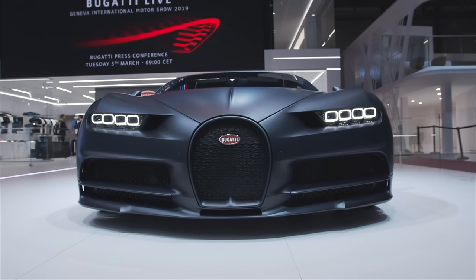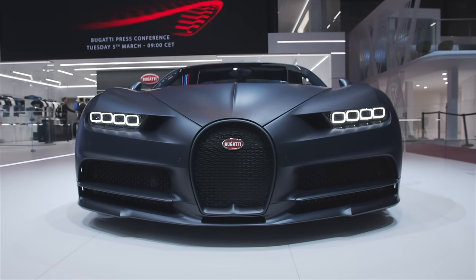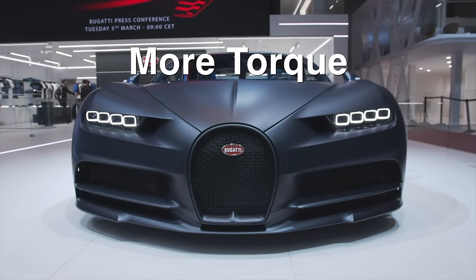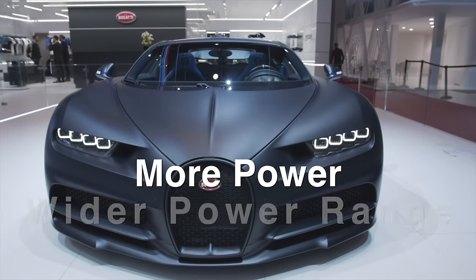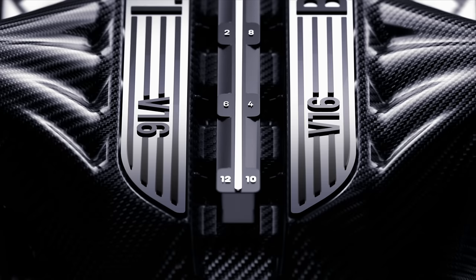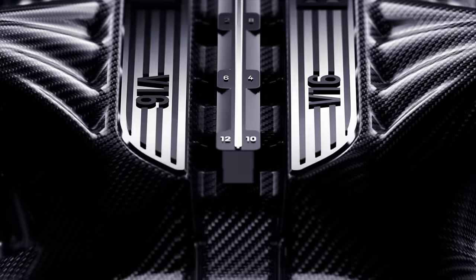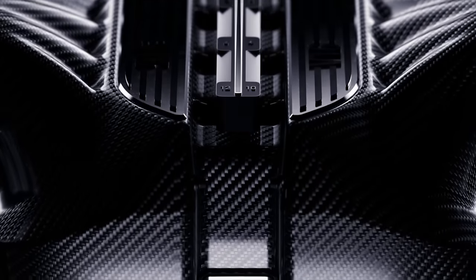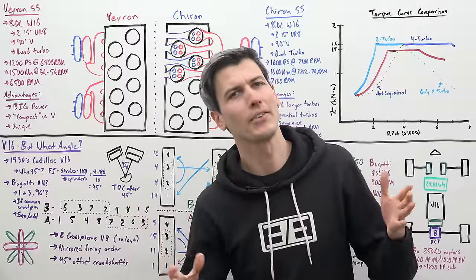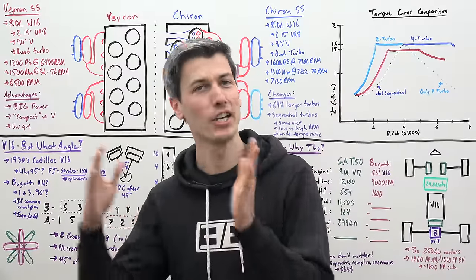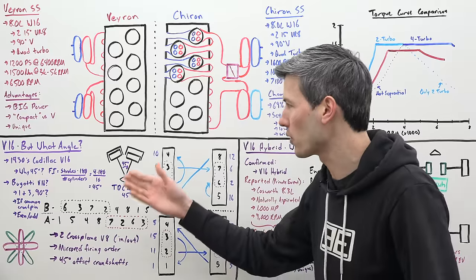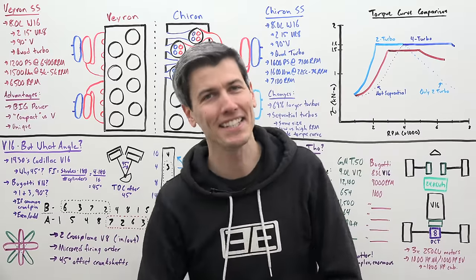If you look at the progression from Veyron to Chiron, the performance goals were to not only increase the torque but to widen the torque curve, meaning not only more power but a more useful range of power. Keep those goals in mind as we progress to the next evolution with the V16. Now the history of the V16 as far as production cars is very short. It all starts with the Cadillac V16.